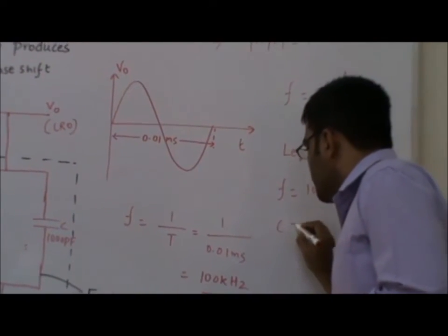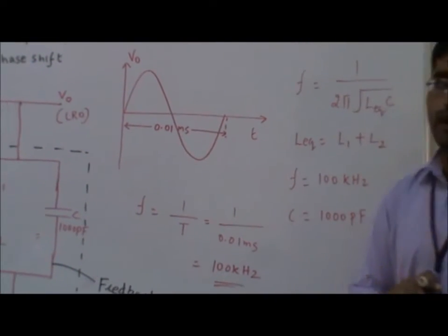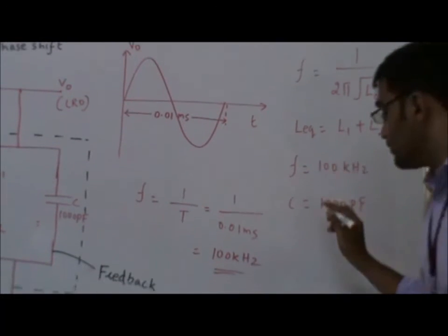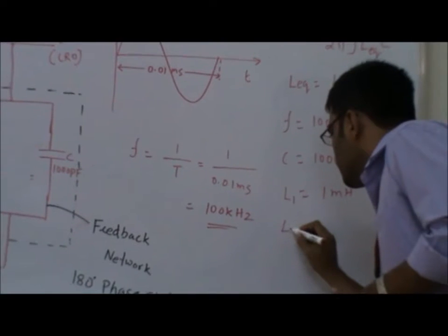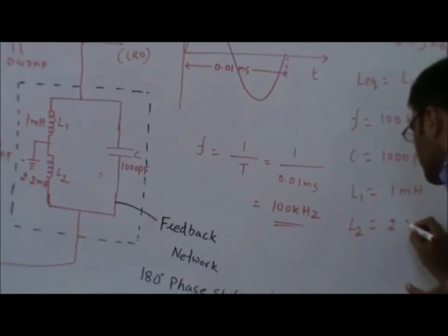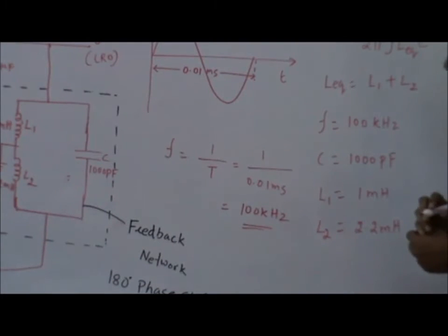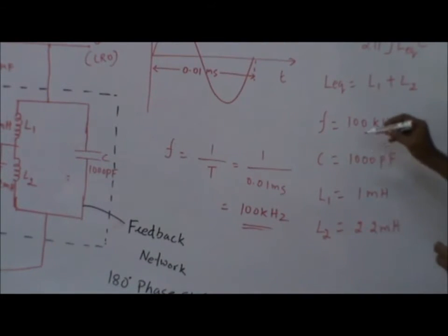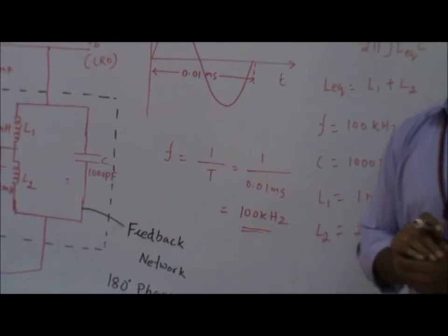Selecting a capacitance of 1000 picofarads and using the equation, I obtain L1 as 1 millihenry and L2 as 2.2 millihenry. With these component values, the frequency of oscillation is 100 kilohertz.